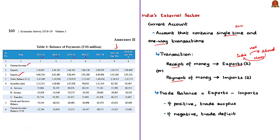Payments refer to imports. The imports of merchandise goods happen from abroad to India — it means we do not have a particular material, so we receive it from a foreign country which produces it, and to receive that material we pay money. The next term you need to know from this table is trade balance.